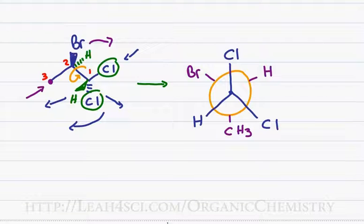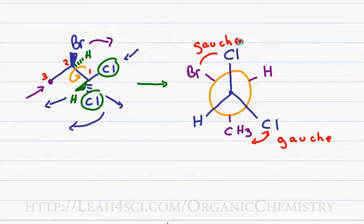If I analyze the energies I see here, I have a chlorine close to a methyl group and this is a Gauche interaction. I also have a chlorine close to a bromine for another Gauche interaction.